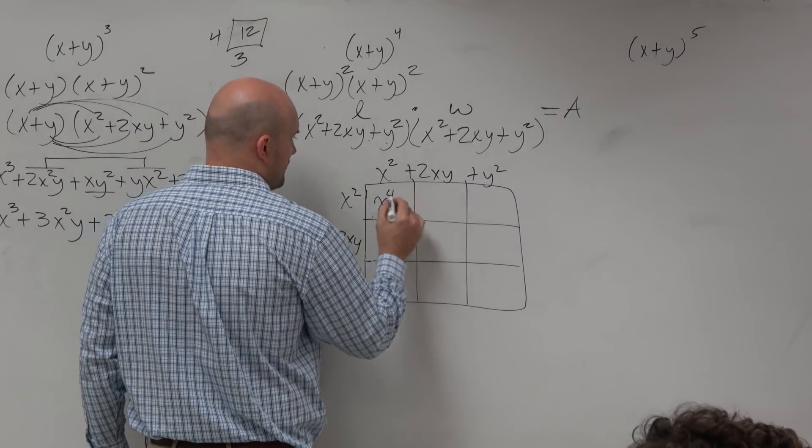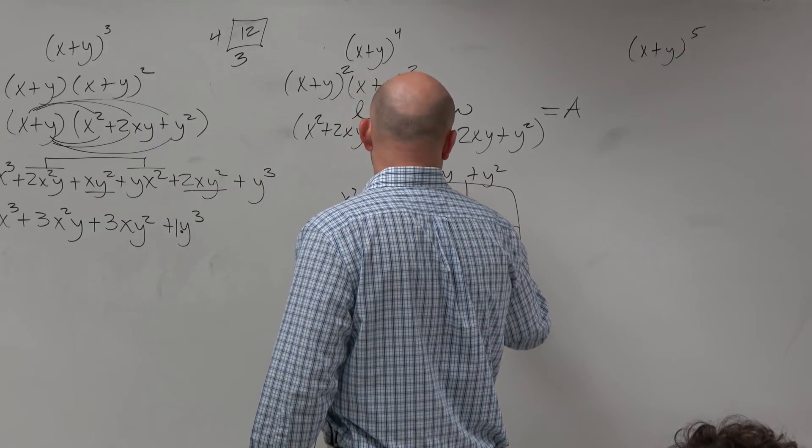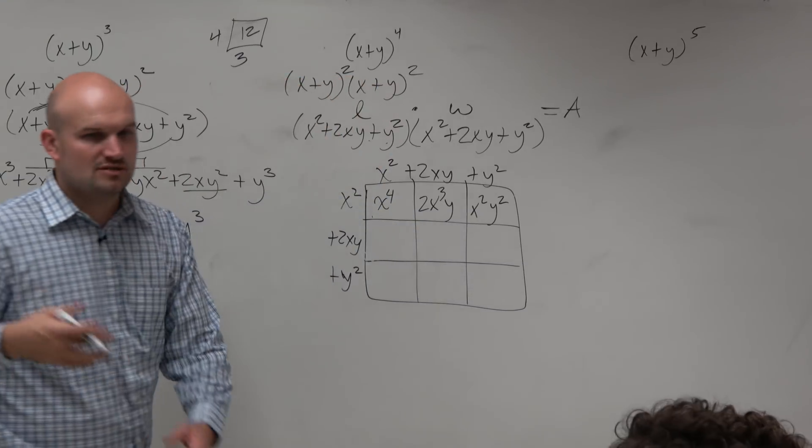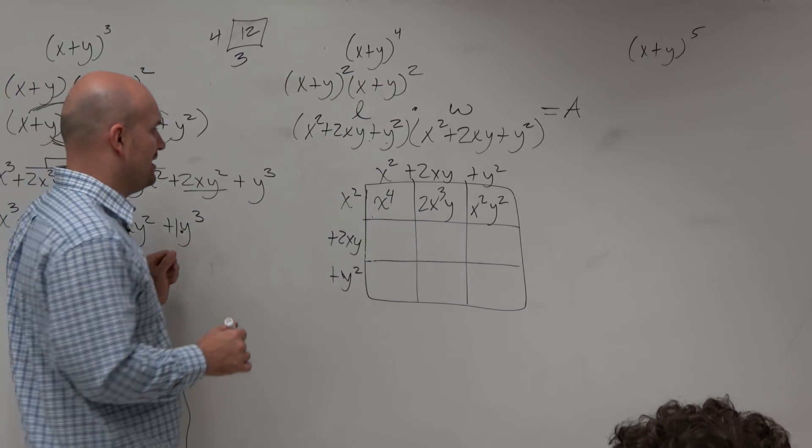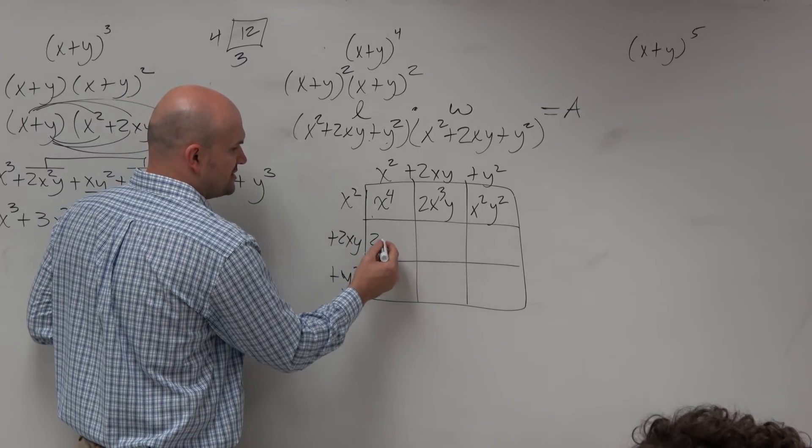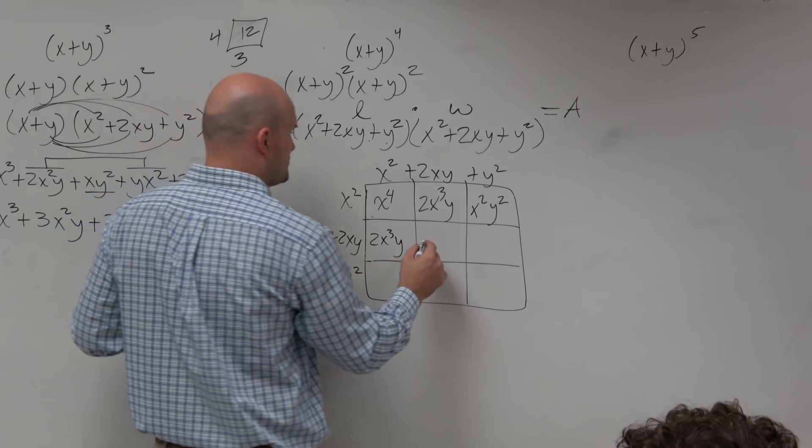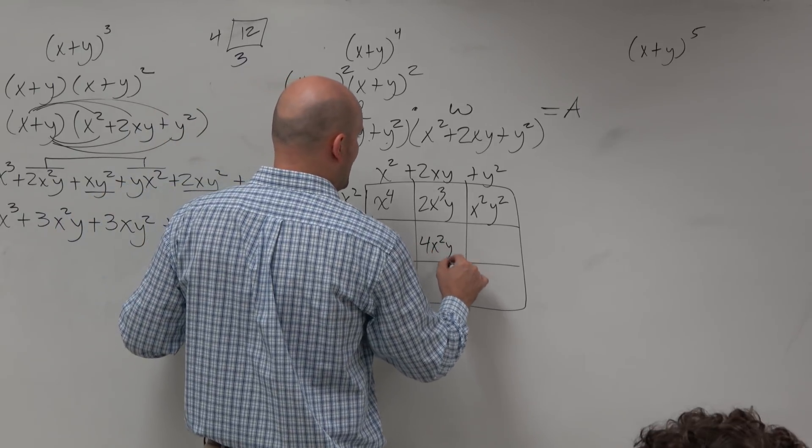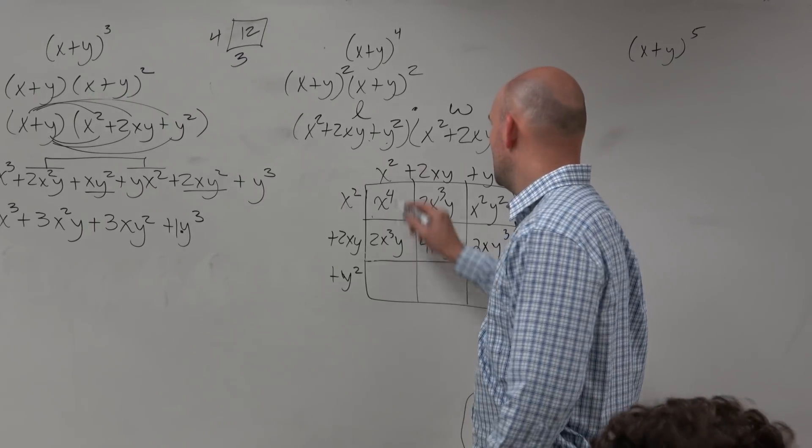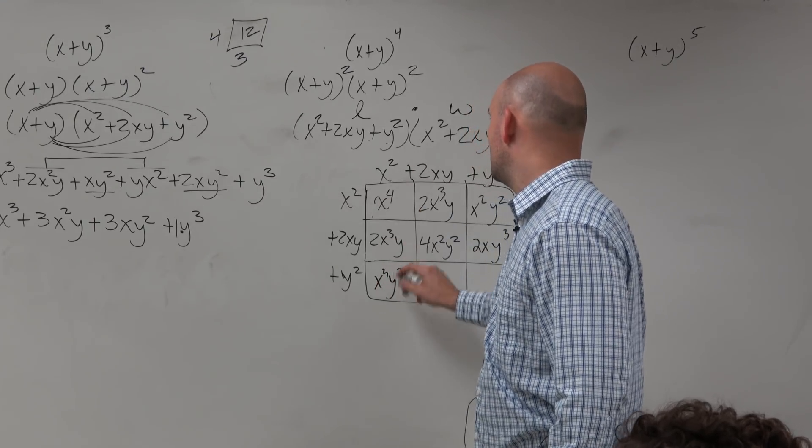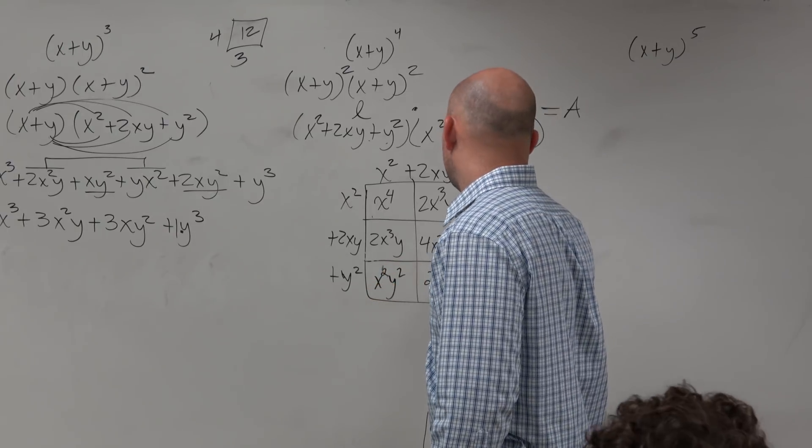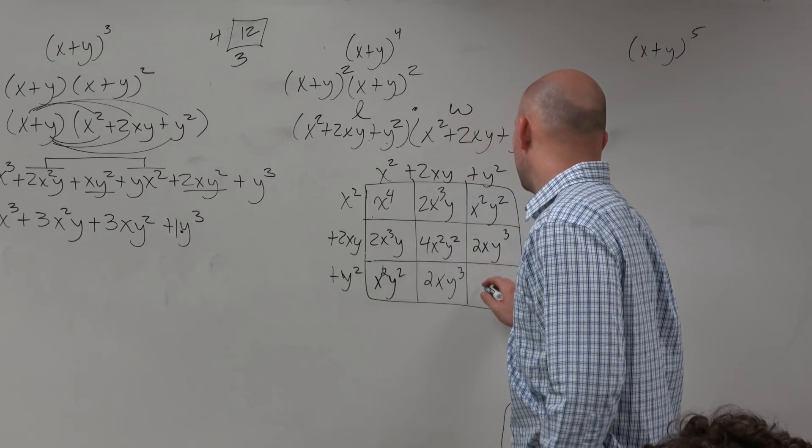x squared times x squared is x to the fourth. x squared times 2xy is 2x cubed y. x squared times y squared is x squared y squared. Sorry, this is hopefully review on multiplying binomials, so I'm just kind of doing this quickly. 2xy times x squared is 2x cubed y. 2xy times 2xy is going to be 4x squared y squared. 2xy times y squared is going to be 2xy cubed. Here, we have x squared y squared. Here, we have 2xy cubed. Here, we have y to the fourth.